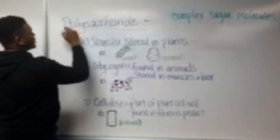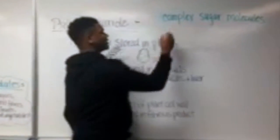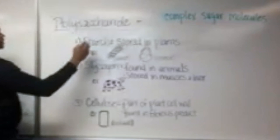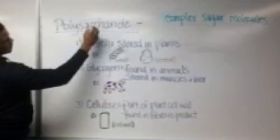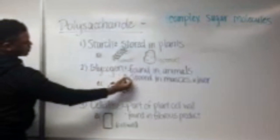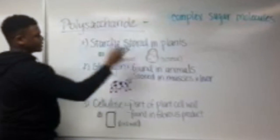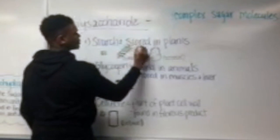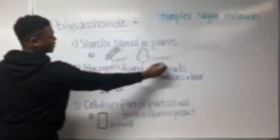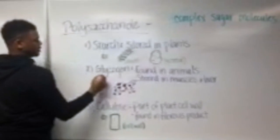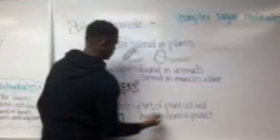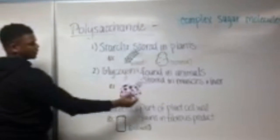Now we will be talking about polysaccharides. Polysaccharides are complex sugar molecules, and the three most common found in a polysaccharide are starch, glycogen, and cellulose. Starches are stored in plants such as wheat and potatoes. Glycogen is found in animals, stored within the muscle and liver — for example, in a cow.